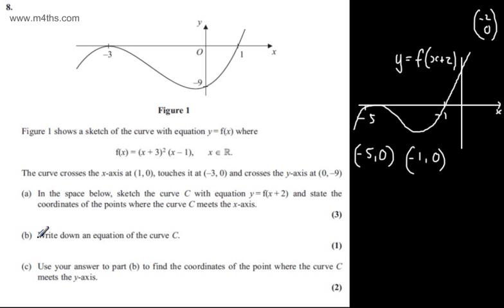In part b, we're asked to write down an equation of the curve C. We're simply now going to add 2 to each of these, so we can say that f(x + 2) will be equal now to (x + 5)² multiplied by (x + 1). You can of course simply look at the graph. All I've done is added 2 to each of these brackets. So this is an equation.